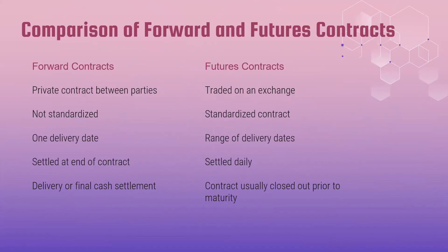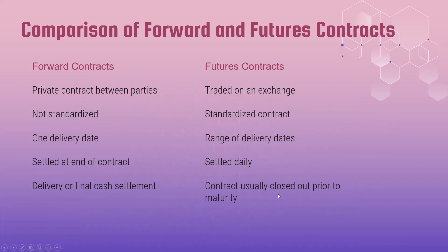Now let's compare forward and futures contracts, as they share some characteristics. Forward contracts are private contracts between parties, while future contracts are traded on an exchange. Forward contracts are not standardized, while future contracts are standardized. There is one delivery date for forward contracts, while futures have a range of delivery dates. Forward contracts are settled at the end of the contract, while future contracts are settled daily. Forward contracts involve delivery or final cash settlement, whereas futures contracts are usually closed out prior to maturity.